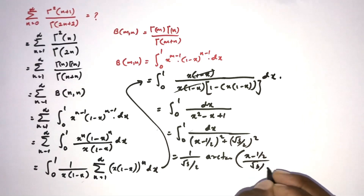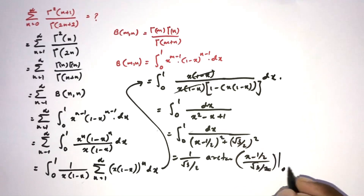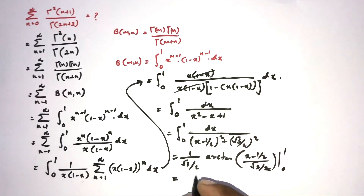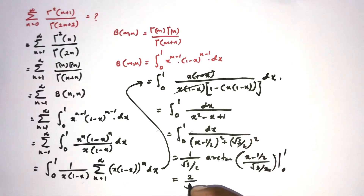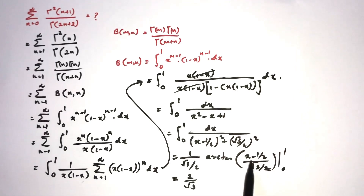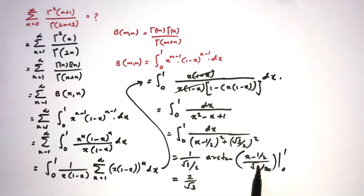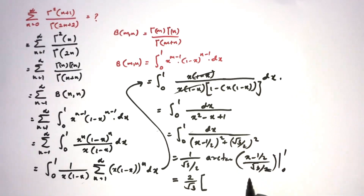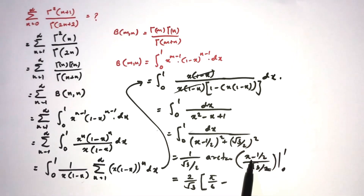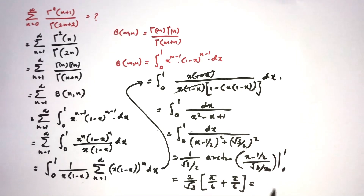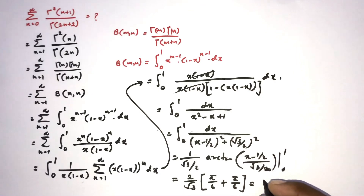Evaluating from 0 to 1, the prefactor is 2 over sqrt(3). Plugging in x equals 1: (1 minus 1/2) = 1/2, and arctan(1/sqrt(3)) equals pi/6. Plugging in x equals 0 gives minus arctan(minus 1/sqrt(3)), which contributes plus pi/6. So we have 2 over sqrt(3) times (pi/6 + pi/6) = 2 over sqrt(3) times pi/3, giving the answer 2pi over (3 sqrt(3)).